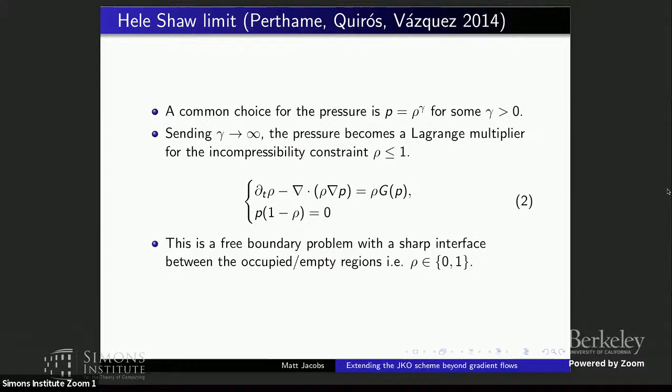Once you take the incompressible limit, if you know the density that doesn't mean you know the pressure, but they still satisfy a Lagrange multiplier condition. You end up getting a free boundary problem with a sharp interface between cancerous and non-cancerous regions — ρ will basically always be either zero or one. This model was first introduced by Perton, Quiros, and Vasquez, who were the first to analyze this incompressible limit.